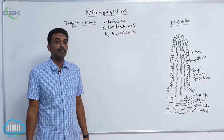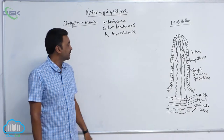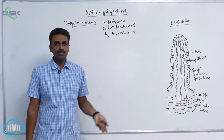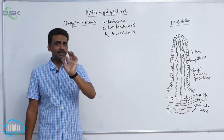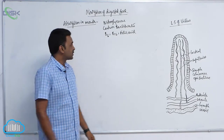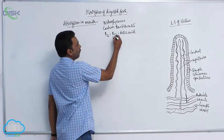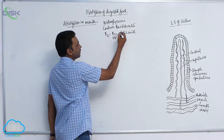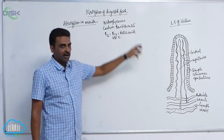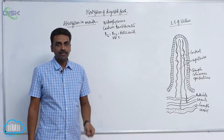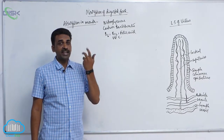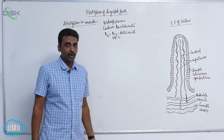Nitroglycerin is used to prevent heart stroke — it is directly absorbed through capillaries into the blood. Certain barbiturates, which are sleeping pills, and certain vitamins like vitamin C, B6, B12, and folic acid are chewed and directly absorbed through the mouth.